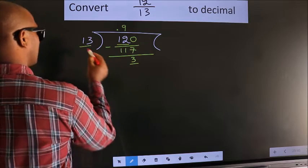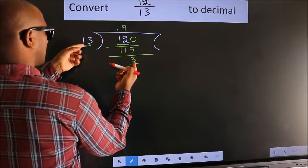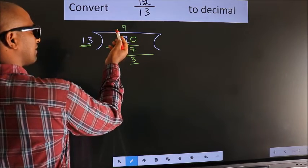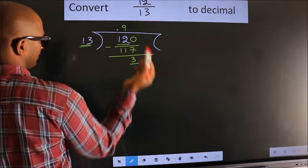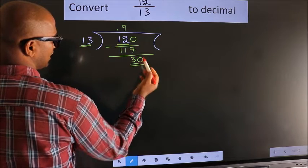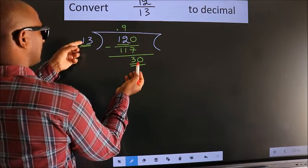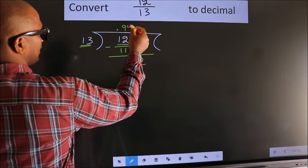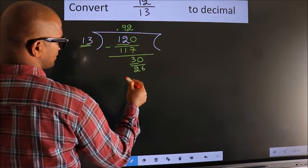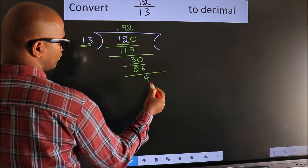Here we have 3, here 13. 3 is smaller than 13. And we already have the decimal, so we can directly take 0. So 30. A number close to 30 in the 13 table is 13 twos, 26. Now we subtract. We get 4.